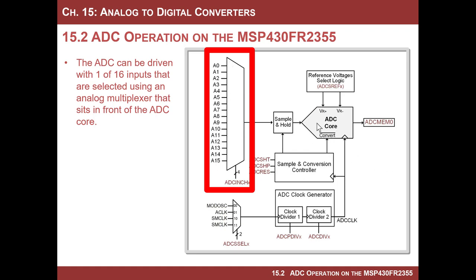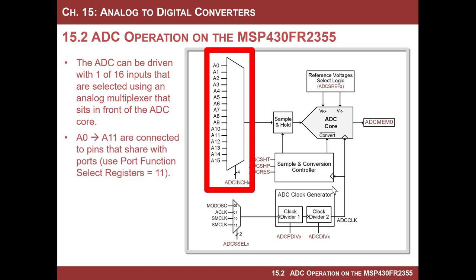When it says 200 kilo samples per second, it's talking about 200 kilobits per second total. But you can switch between channels — if you're doing two channels and ping-ponging back and forth, you'd get 100 kilobits per second on each channel, or if you did four, you'd only get 50 kilobits per channel. This is how most MCUs work: just one core with a huge multiplexer where you choose which channels to look at.